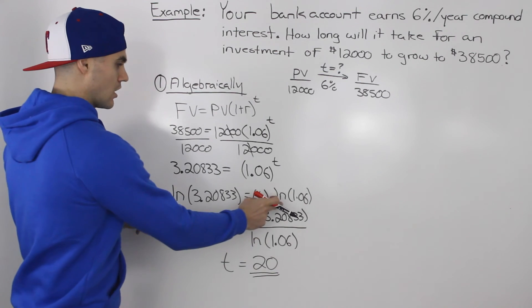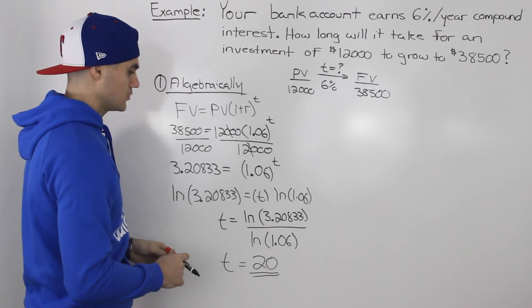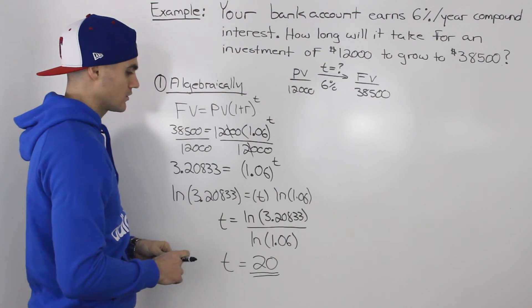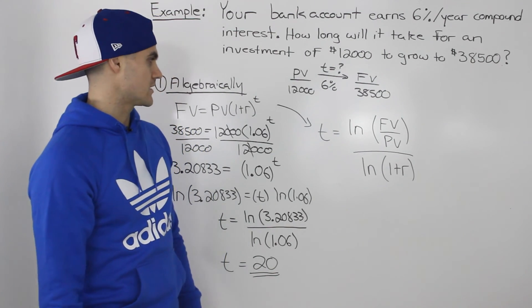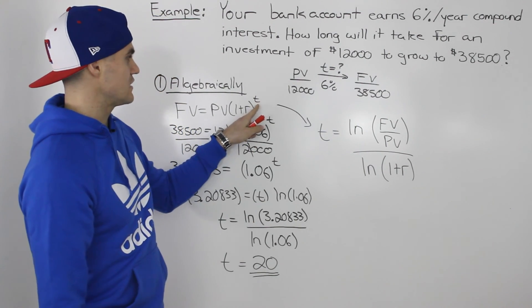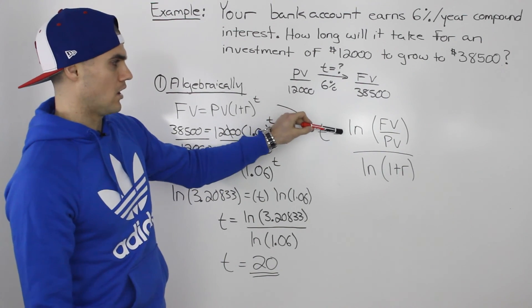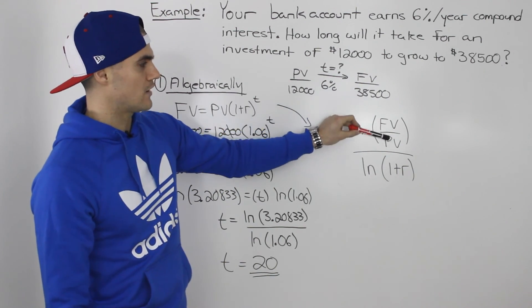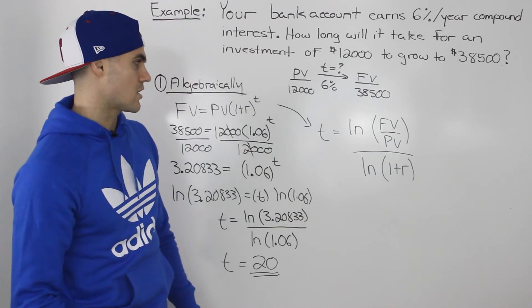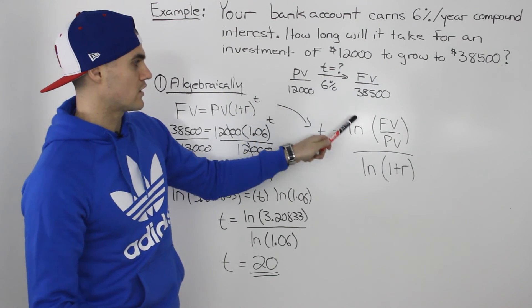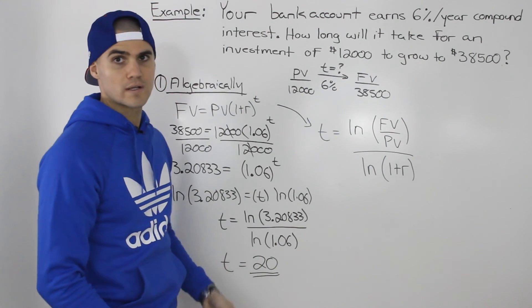Now, this ln here, it didn't have to be ln. It could also be log. So if you feel more comfortable using logarithms in your calculator, you can do that as well. You would get the same answer. Another thing you could have done algebraically is isolate for that t variable in the equation. And if you did that, basically you would have ln of the future value over the present value in brackets all over ln of 1 plus r. So if you took all of your variables and plugged it in here right away, you would get a t value of 20 as well.